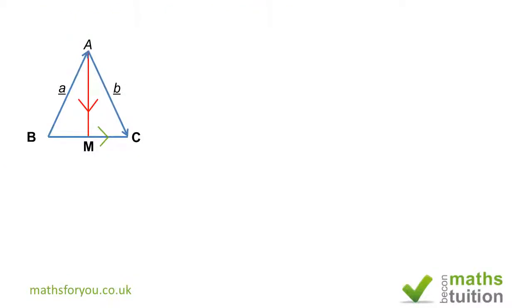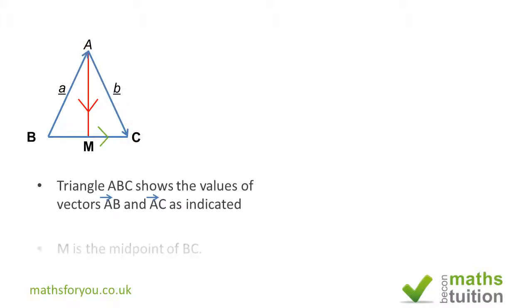Hello and welcome to the second slide. It's a bit more complicated than the first slide. Essentially what you've got here—if I try and paraphrase—we're given two vectors to start off with which form a triangle. You've got vector BA which you represent with a, and vector AC which you represent with b, and M is the midpoint of BC.